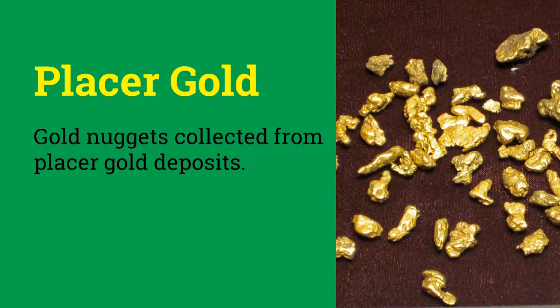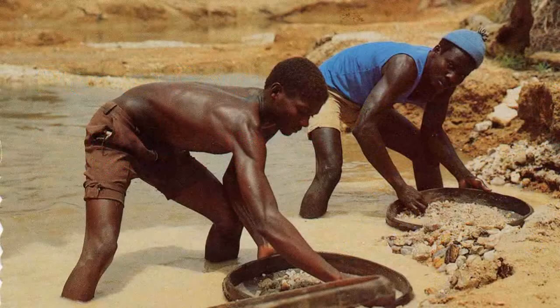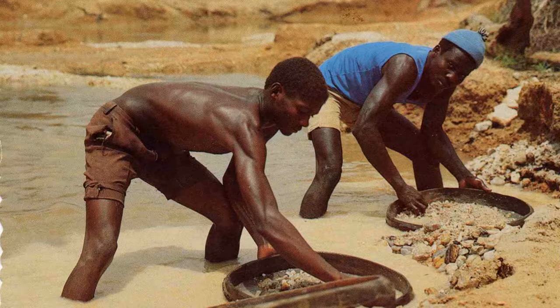Placer gold deposits are formed when gold from weathered rock concentrates in streambeds. The high specific gravity of gold and diamond causes crystals to settle at the bottom of a pan — a process called panning. Specific gravity is therefore also used to separate minerals from the rest of the gangue in mineral deposits.